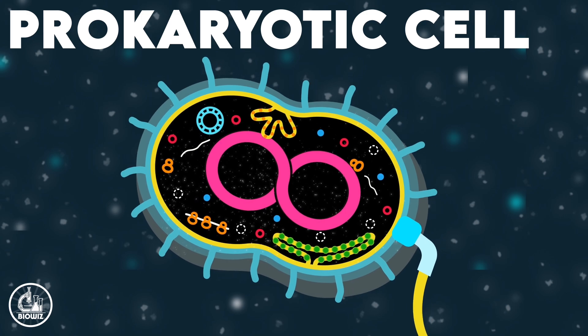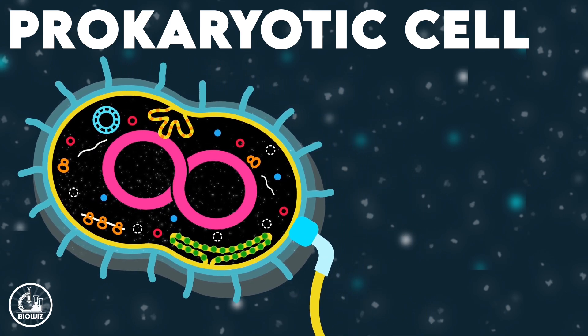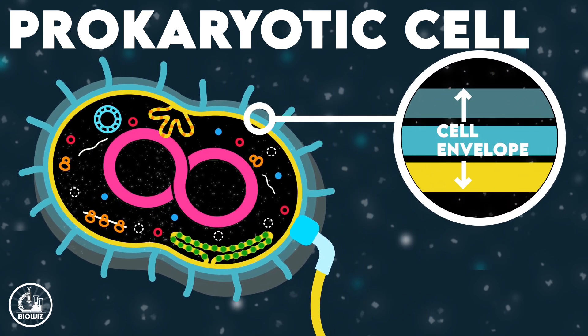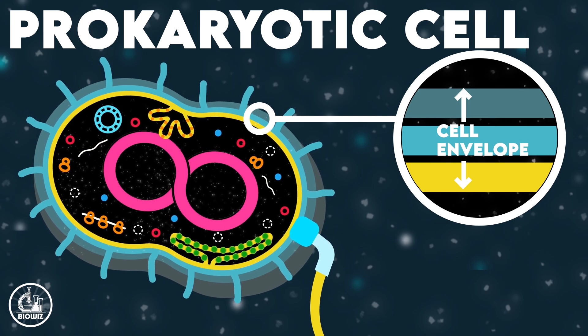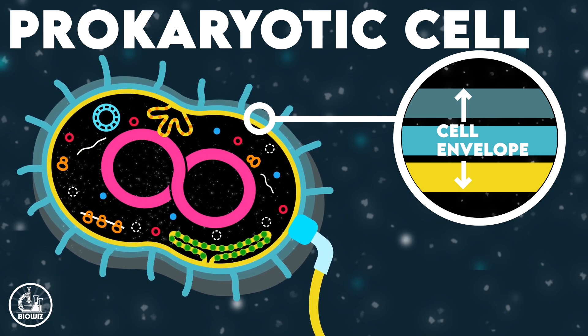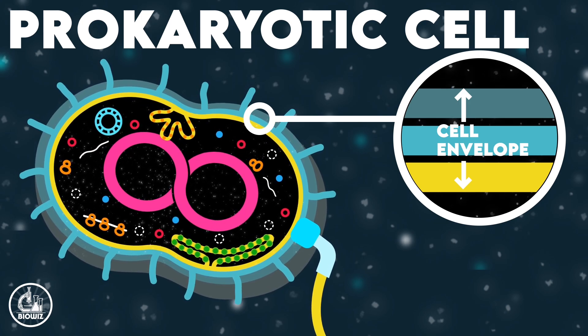The boundary of the prokaryotic cell, separating the internal compartment from the outside world, is made up of three layers and is combinedly called the cell envelope.